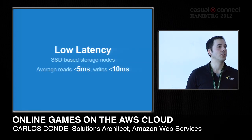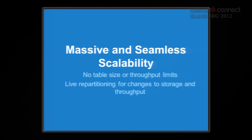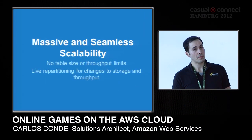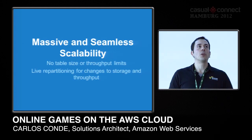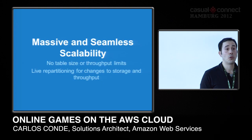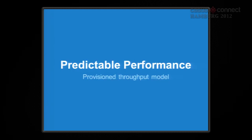Another key feature is that the model is built not around how much data you want to store, but around how much capacity and throughput you need. When you create a table on DynamoDB, you don't say "I want to store two terabytes"; you say "I want to read 500 records per second." This approach lets you say: I don't care how much data I store — what I care about is that my players, even if there are millions of them, can push and pull data as fast as possible. This gives you predictable performance.